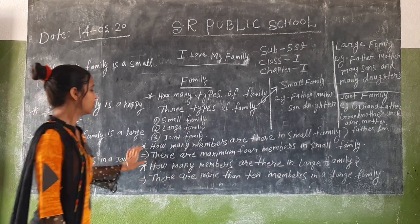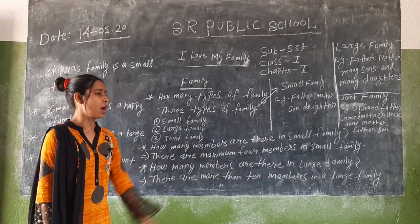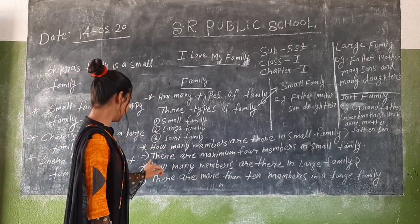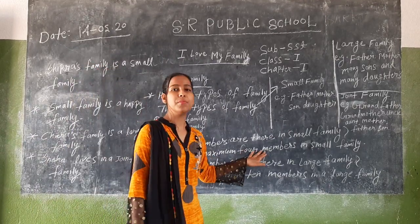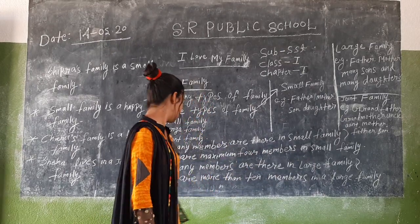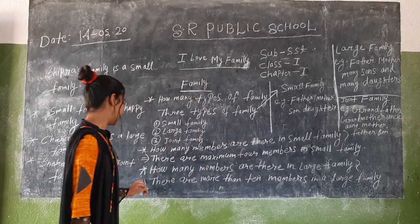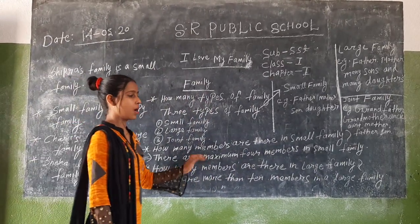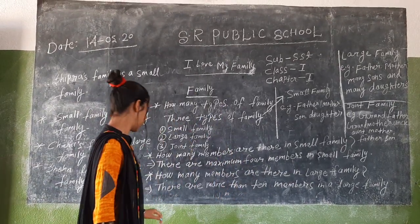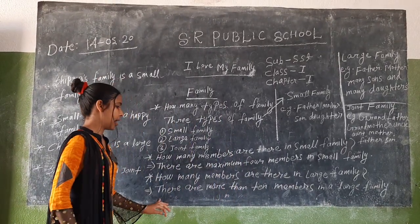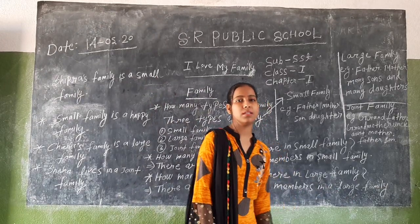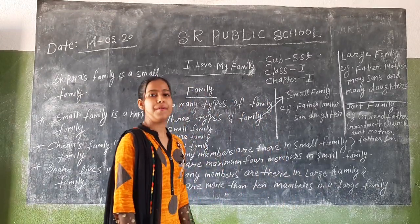Next, how many members are there in a small family? There are maximum 4 members in a small family. And how many members are there in a large family? There are more than 4 members in a large family.